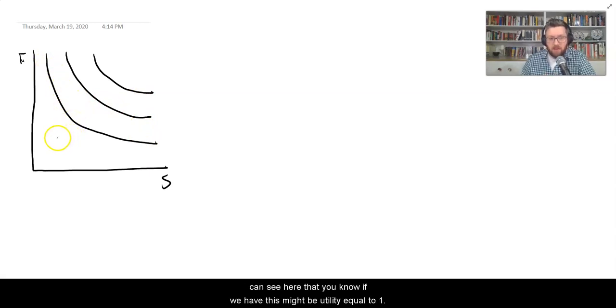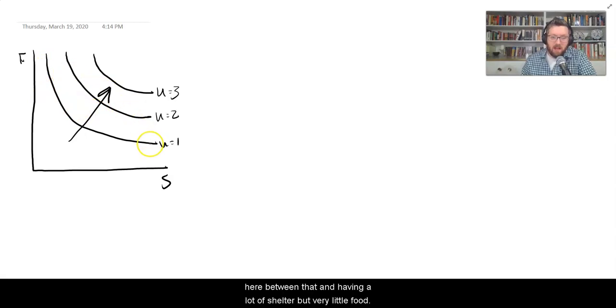And we can see here that if we have, this might be utility equal to one, utility equal to two, utility equal to three. So as we have more food and more shelter, we're better off. If we have a lot of food but very little shelter, we're indifferent as drawn here between that and having a lot of shelter but very little food.